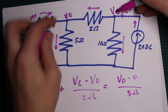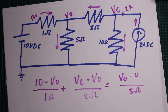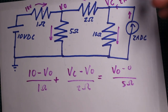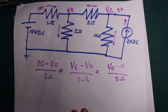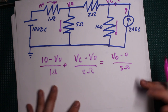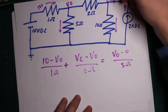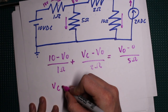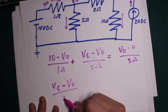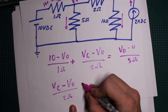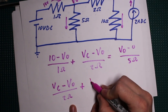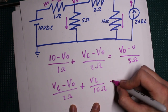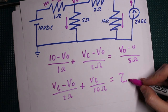If we knew Vc we could calculate Vo, but since we don't know Vc we need a second equation — we have two variables in the system. The second equation comes from the current source node: the current through the 2-ohm plus the current through the 10-ohm equals 2 amps. That gives us (Vc − Vo)/2 plus Vc/10 equals 2. So those are our two equations, and now we have to do the algebra.